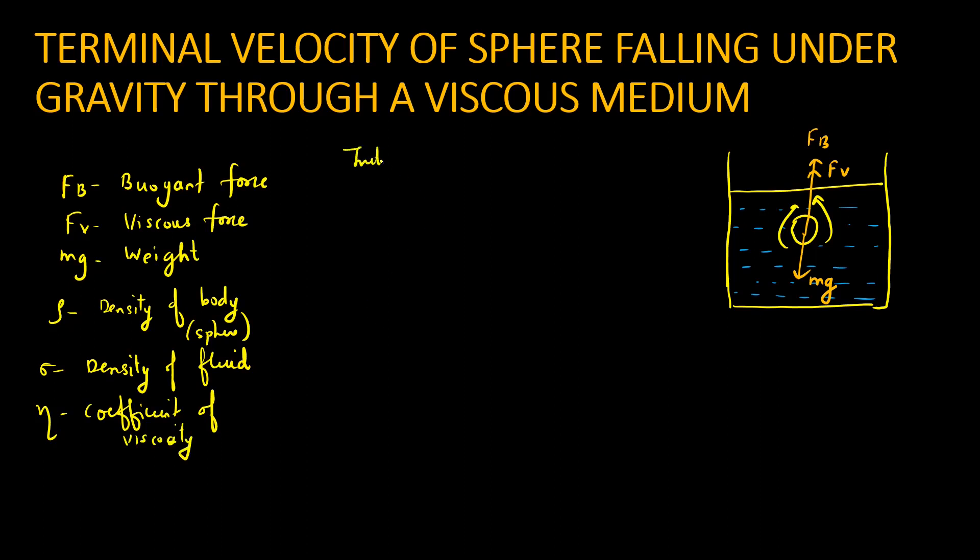So initially, acceleration was not zero. A stage comes where FV and FB balance or cancel mg, and what happens, net force becomes zero. Summation of all the forces should be mass into acceleration, correct?